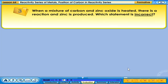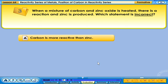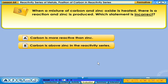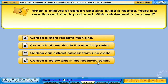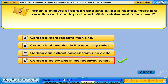When a mixture of carbon and zinc oxide is heated, there is a reaction and zinc is produced. Which statement is incorrect? A: carbon is more reactive than zinc. B: carbon is above zinc in the reactivity series. C: carbon can extract oxygen from zinc oxide. D: carbon is below zinc in the reactivity series. The correct answer is D.